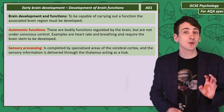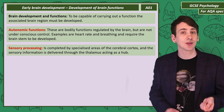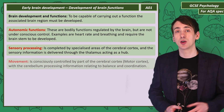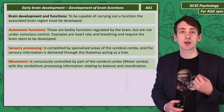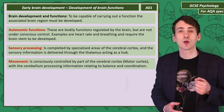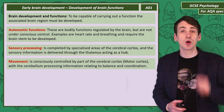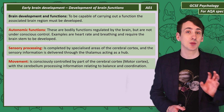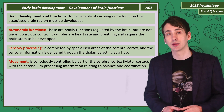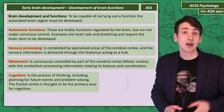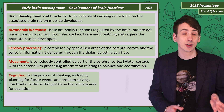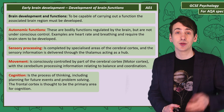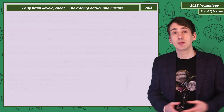Sensory processing requires specialist areas of the cortex and the thalamus acting as a hub to develop. Voluntary movement is controlled consciously by a specialist area of the cerebral cortex called the motor cortex. The cerebellum is also needed to process balance and coordination information. The process of thinking, or cognition, involves planning for the future and solving problems, and the development of the frontal lobe is needed for cognitive thinking.